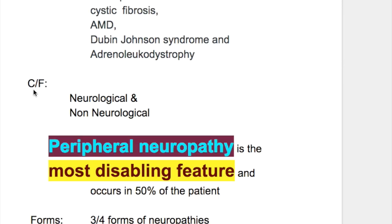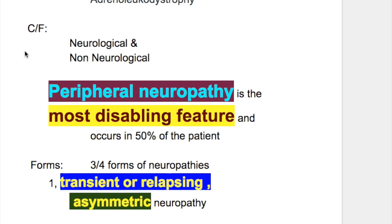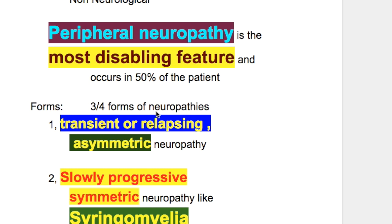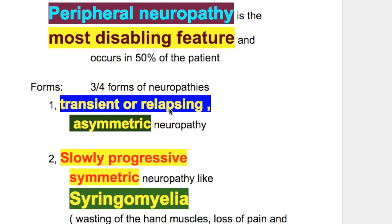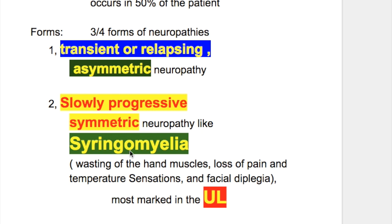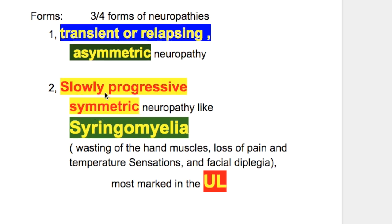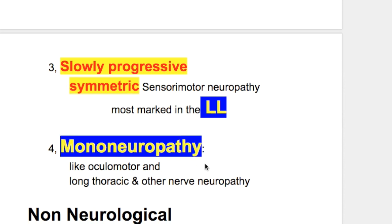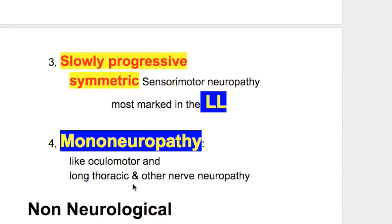The clinical features of Tangier's disease may be neurological and non-neurological. Peripheral neuropathy is the most disabling neurological feature and occurs in 50% of patients. There are four types: transient or relapsing asymmetric neuropathy; slowly progressive symmetric neuropathy like syringomyelia affecting the upper limb with wasting of hand muscles, loss of pain and temperature sensation, and facial diplegia; slowly progressive symmetric neuropathy involving the lower limb; and mononeuropathy involving the oculomotor nerve, long thoracic nerve, or other nerves.